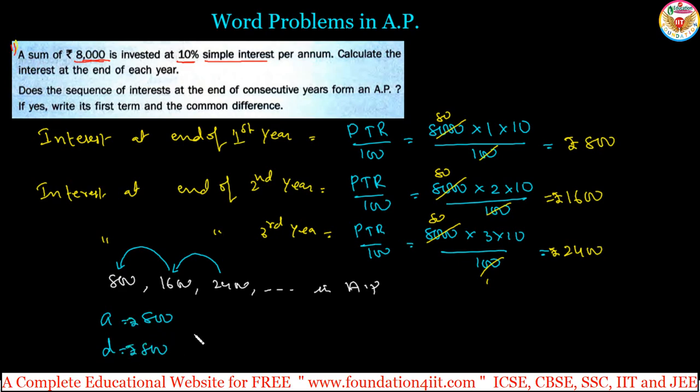Therefore, the first term is ₹800 and the common difference is also ₹800. As per the problem, yes it is in AP. Use the particular formula for simple interest and apply it.